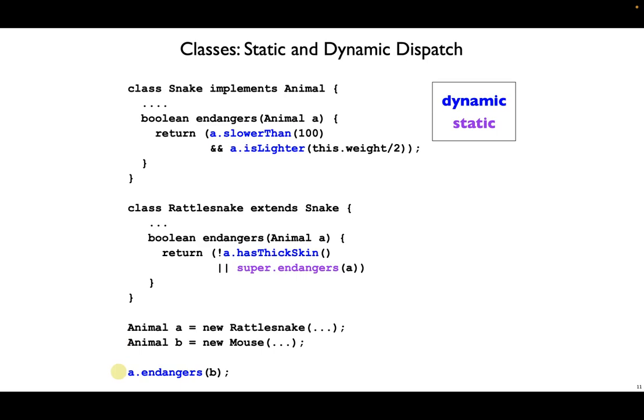So we're asking whether the rattlesnake endangers the mouse. The result here is going to be true. But let's slow down and focus on how we get to that true result. And we want to pay special attention to the method calls that happen along the way.